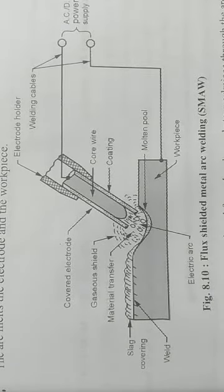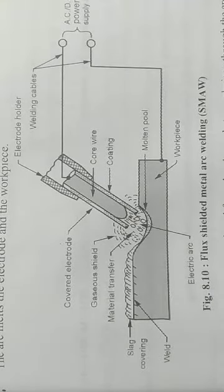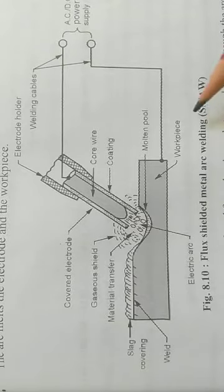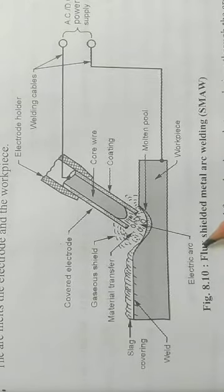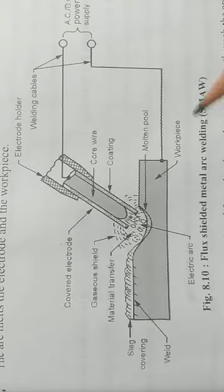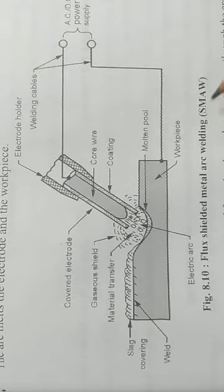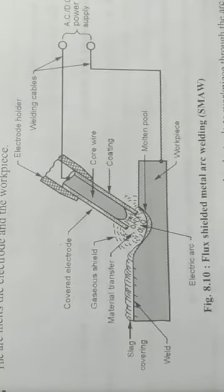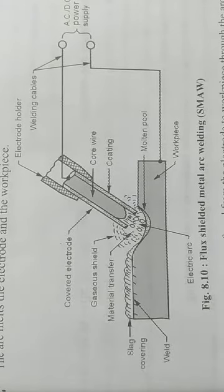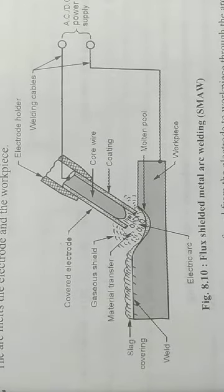Students, today we will be learning about shielded metal arc welding. This is also known as flux shielded metal arc welding. In short, it is known as SMAW (Shielded Metal Arc Welding) or FSAW (Flux Shielded Arc Welding).